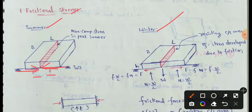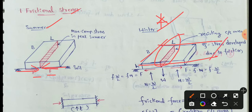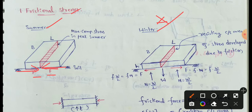In Winter, frictional stresses are also important. In the winter condition, we have the cross-section area with length, width, and pavement. The resisting cross-section area is considered, and in winter season, friction stresses act like tension — towards the outer side.